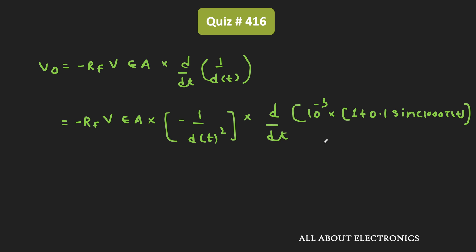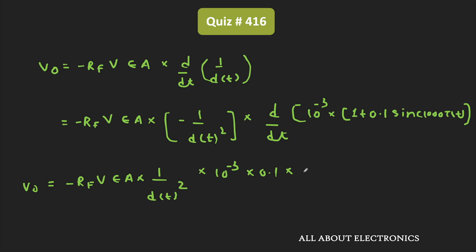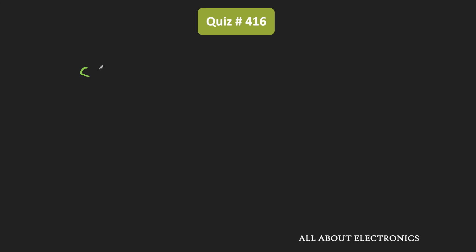So first of all, let us differentiate this expression and then we will substitute the values of Rf, V, and εA. But here we also need to know the value of εA. To get this value, we have been given that the capacitance C equals 2pF at t equal to 0ms.